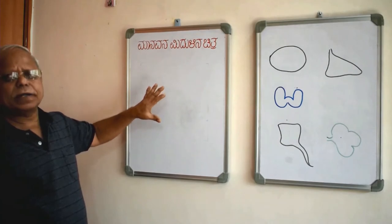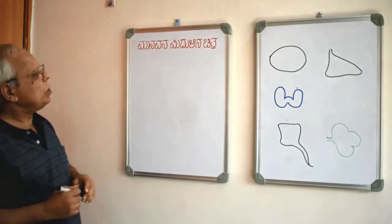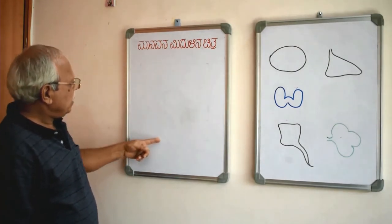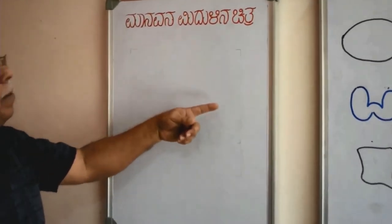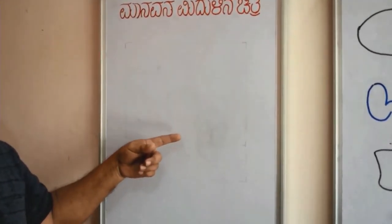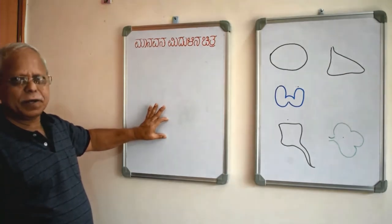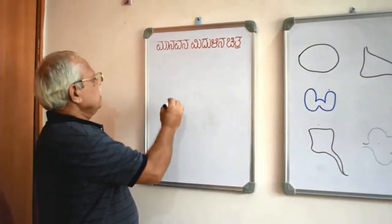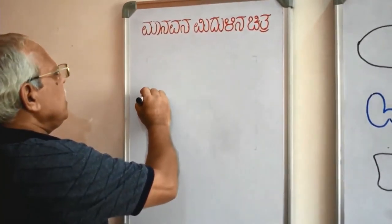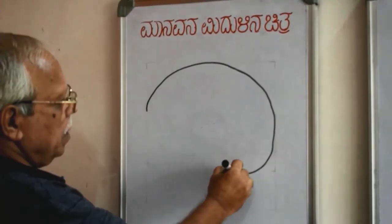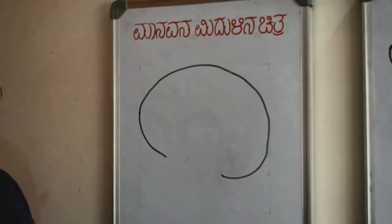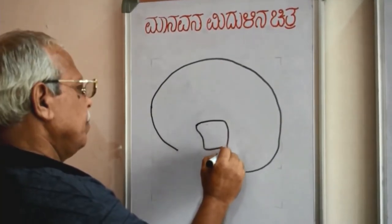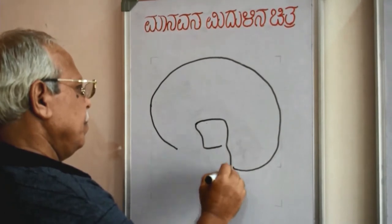First, make a square on your paper. Inside the square you will draw the brain and leave empty space above it. Start drawing the outer skull part from inside the box, extending the line. Then draw the inner part — that is the midbrain. The midbrain is ready now.